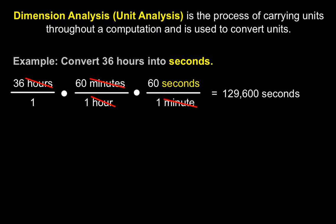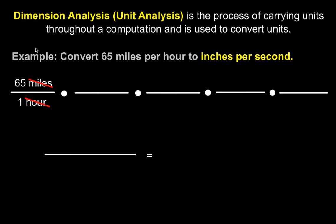Here's another example. We want to convert 65 miles per hour to inches per second. So 65 miles per hour is written as a fraction 65 miles divided by 1 hour.